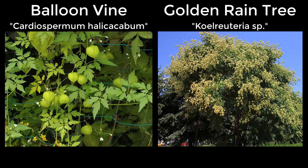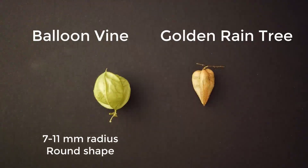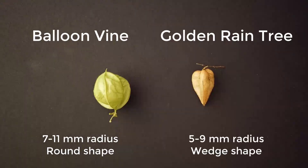Both plants have different shaped fruits. Fruits of the balloon vine have a radius of 7 to 11 millimeters and are round. Fruits of the golden rain tree have a radius of 5 to 9 millimeters and are a wedge shape.